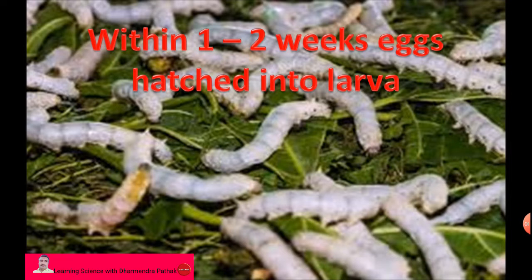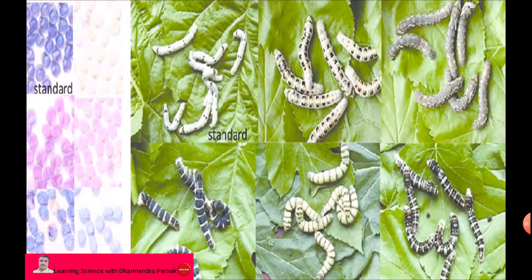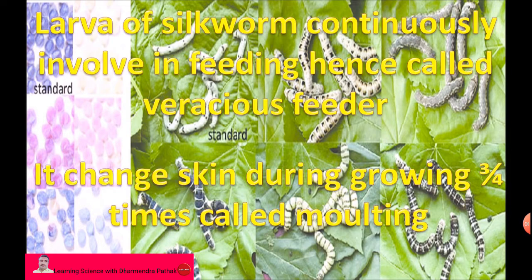Within one to two weeks, the egg hatches into a larva, which is called a caterpillar or silkworm. The larva of silkworm is continuously involved in feeding, hence called a voracious feeder. It actively feeds on mulberry or castor leaves. The larva changes its skin during growing about three to four times, which is called molting.